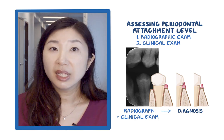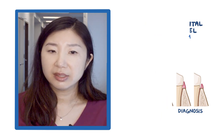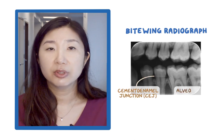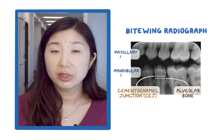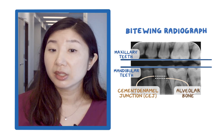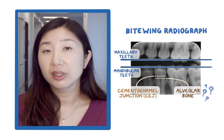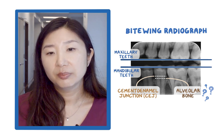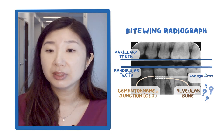However, radiographs are absolutely necessary in the diagnosis and treatment of periodontal disease. A bitewing radiograph will give you the best picture of the relationship between the CEJ and the alveolar bone, since it will project the image of both maxillary and mandibular teeth in the most parallel orientation. So where is this healthy alveolar bone supposed to be on a bitewing radiograph? It is not located at the CEJ level, but at a distance of about 1–2 millimeters away from the CEJ apically.